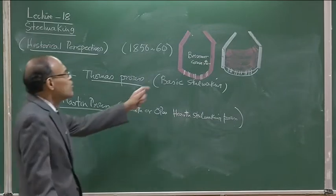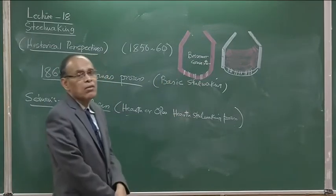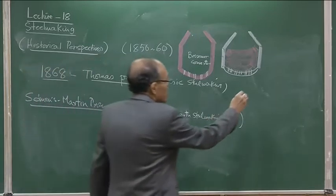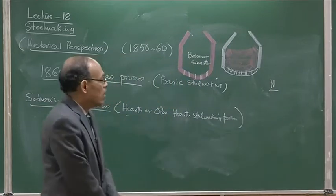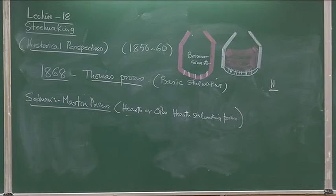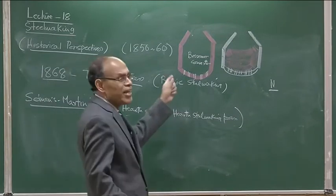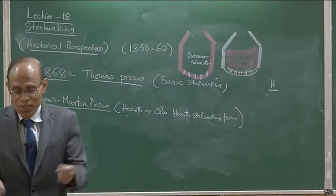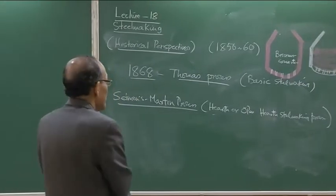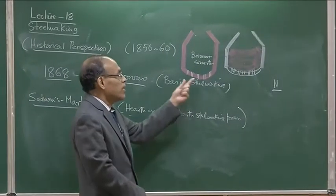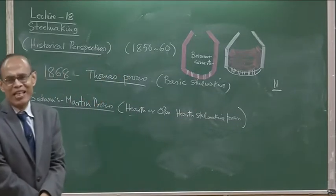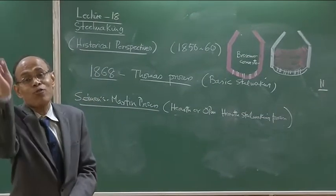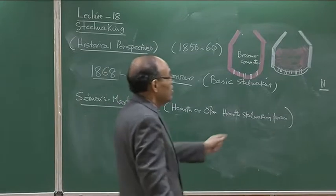One of the major problems with the Bessemer steel making process was that because air was blown through steel, the dissolved nitrogen content tended to be very large. Steel can dissolve a significant amount of nitrogen, and in equilibrium with air at a partial pressure of 0.79 at 1600 degrees centigrade, it is close to 7800 ppm of nitrogen that can remain in steel. We all know that nitrogen tends to make steel brittle and hard, so for deep drawing steel in particular, high nitrogen is not desirable. Oxygen also gets dissolved into steel, so it is not quite a pure steel.